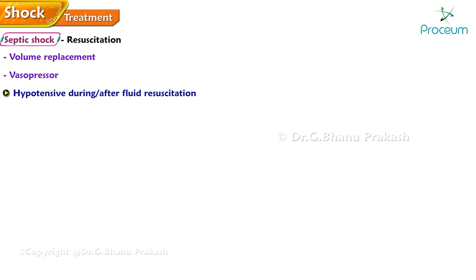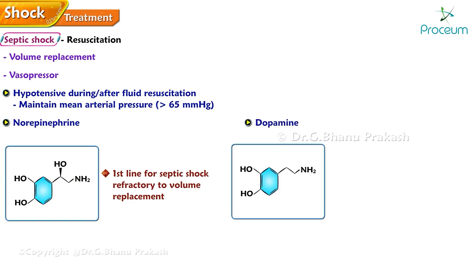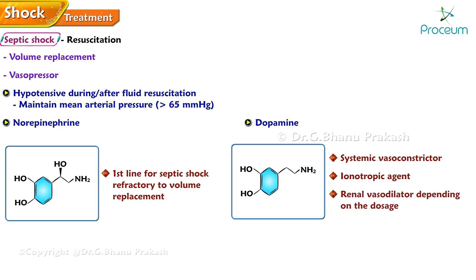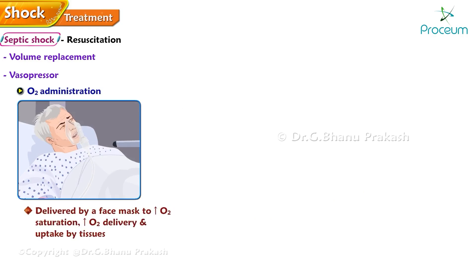Vasopressor: if the patient is hypotensive during or after fluid resuscitation, vasopressors are used to maintain a mean arterial pressure of more than 65 mmHg. Norepinephrine is the first-line agent in septic shock. If refractory to volume replacement, dopamine is used as a systemic vasoconstrictor, inotropic agent, or renal vasodilator depending on the dosage.